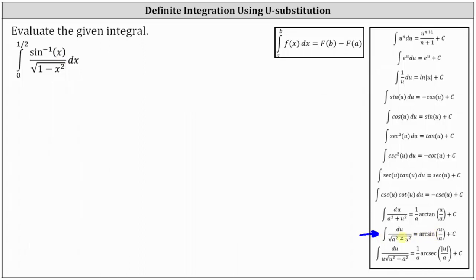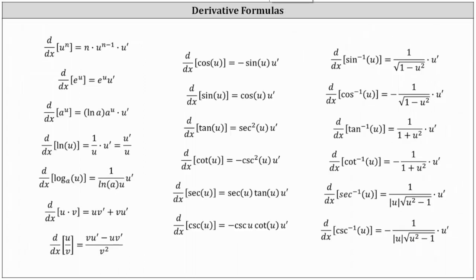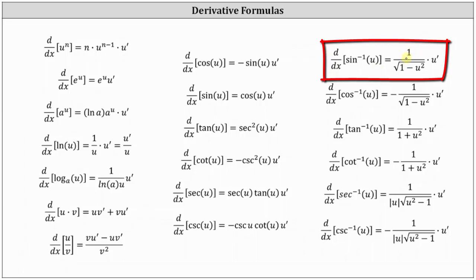This integration formula should remind us of the derivative of arc sine or inverse sine. Remember, the derivative of inverse sine of u with respect to x is equal to one divided by the square root of one minus u squared times du. In our case, notice u is equal to x, and therefore u prime is equal to one.